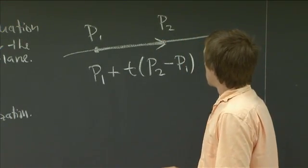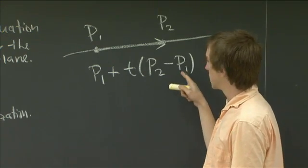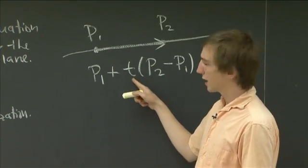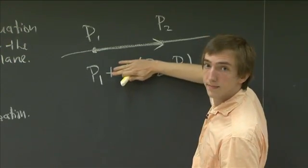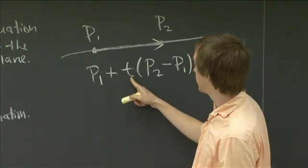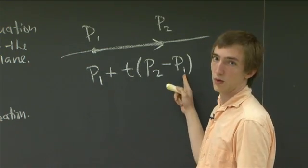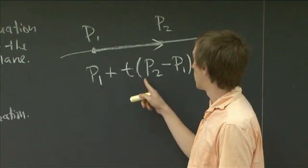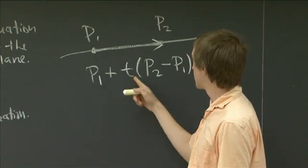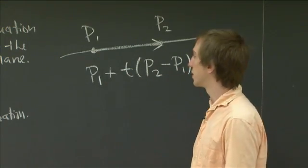So this is a reasonable thing to do, because if we plug in T equals 0, then we just get P1. And if we plug in T equals 1, then we get P1 plus P2 minus P1. We just get P2. So this line definitely goes through those two points, and that's all that we really need.